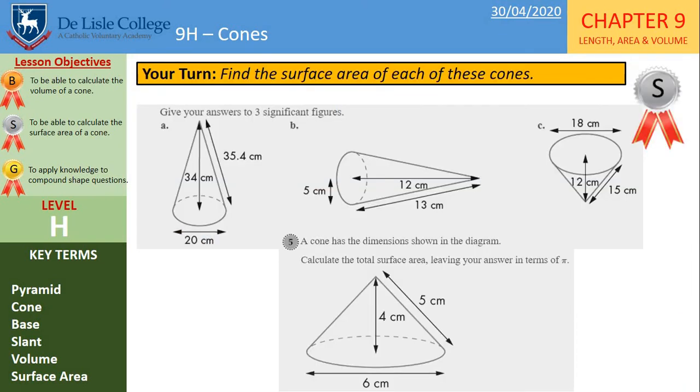OK, let's have a go at these questions then. Make sure you show all of your working. Pause the video while you work through these. OK, let's mark them. Question A is 1430 centimeters squared. B, 283 centimeters squared. And C, 679 centimeters squared. And the last question is 24 pi centimeters squared. Do you remember that this is area? So your units are going to be squared units.